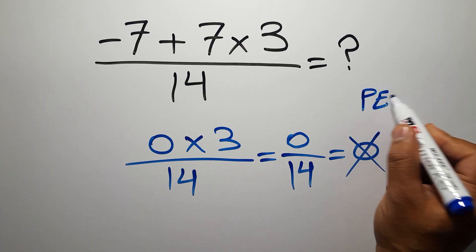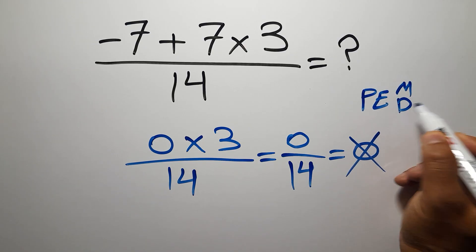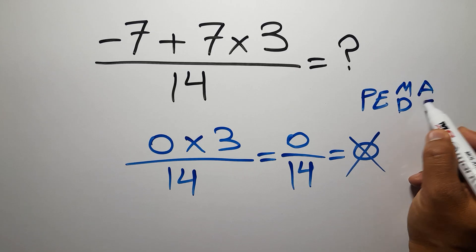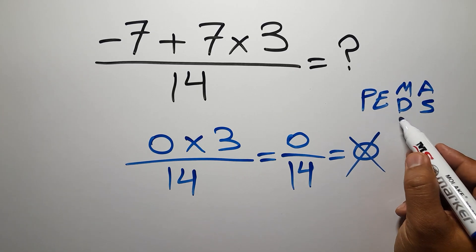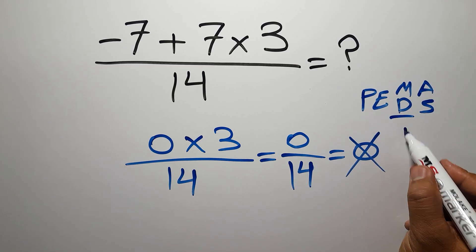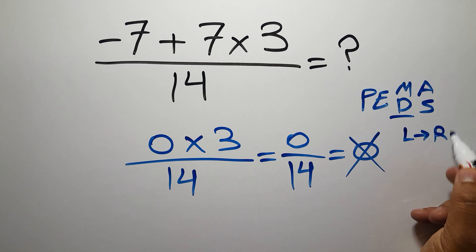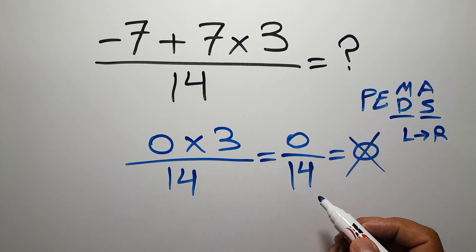have to do parentheses, then exponents, then multiplication or division, and finally addition or subtraction. Remember that multiplication and division have equal priority and we have to work from left to right. The same applies to addition and subtraction.